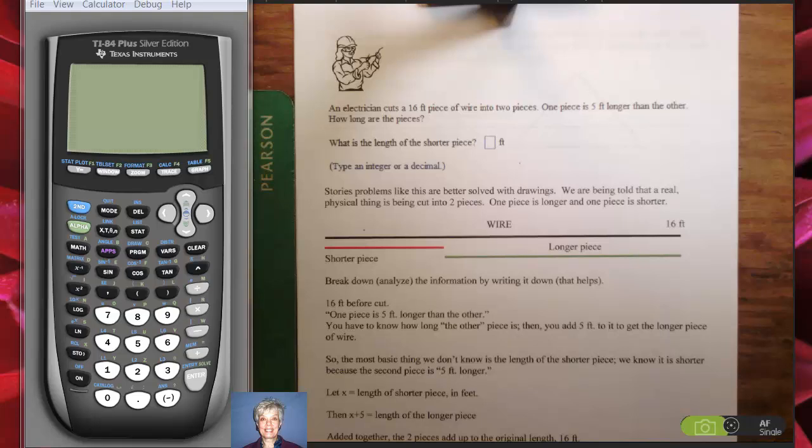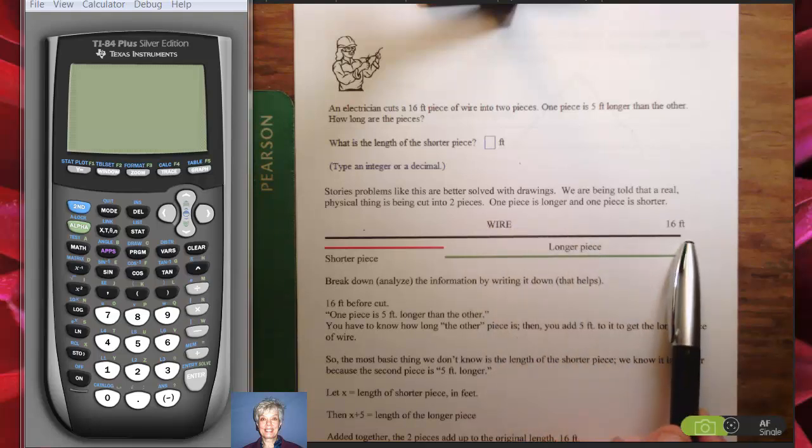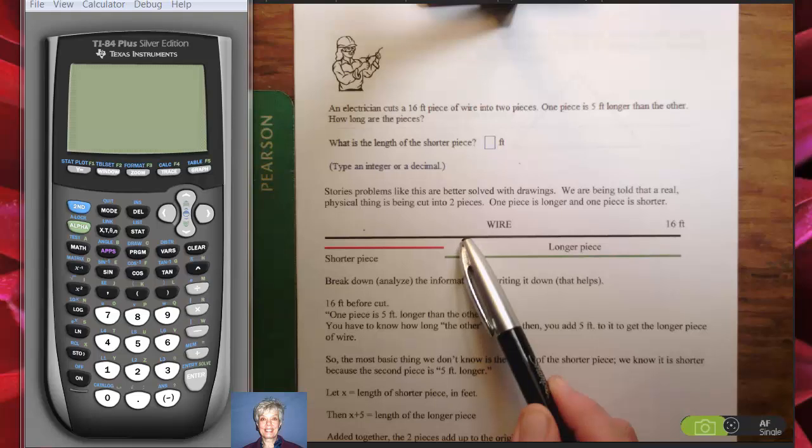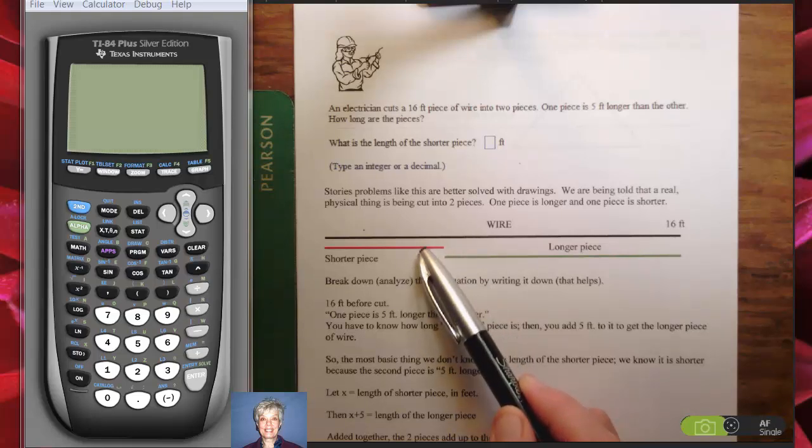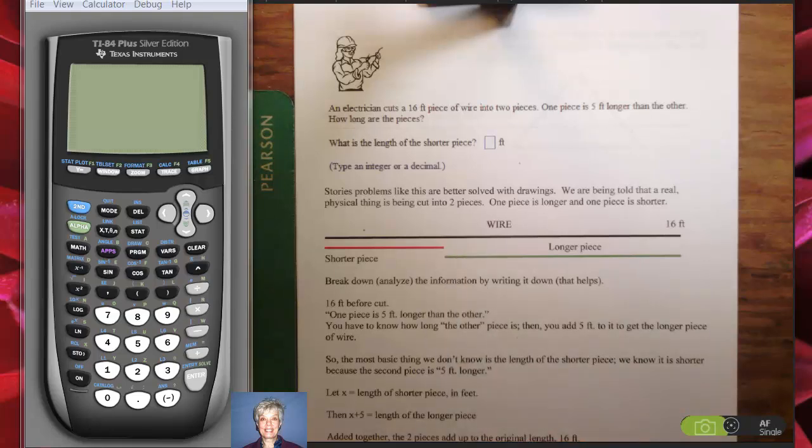When you stop to think of it, this problem is almost like the Senate problem we did in the previous video. Story problems like this are better solved with drawings. We're being told that a real physical thing is being cut into two pieces. One piece is longer and one piece is shorter, so I've tried to make a picture of the situation. Now we're going to break down the information.